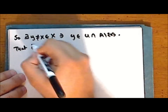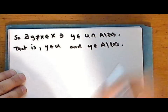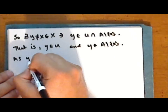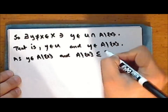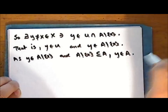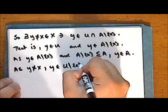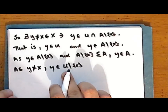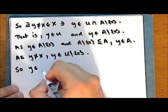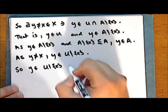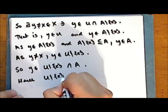That is, the point y is in the set U and the point y is in the complement of the singleton containing x in the set A. As the point y is in this complement, and this complement is a subset of the entire set A, the point y is in the set A. And as the point y is distinct from the point x, the point y is in the complement of the singleton containing x in the set U — which is now a deleted neighborhood of the point x. So this point y is in the intersection of the deleted neighborhood of the point x with the set A, and hence this intersection is not empty.